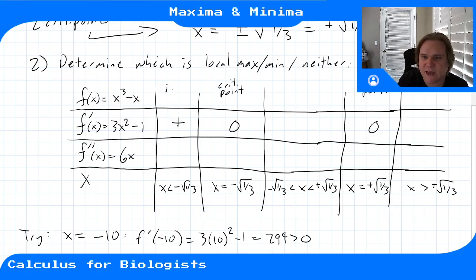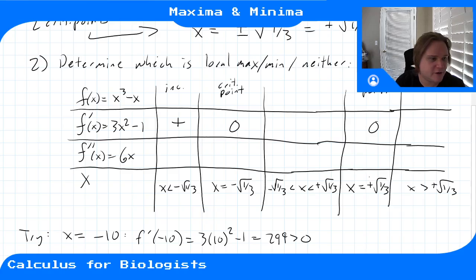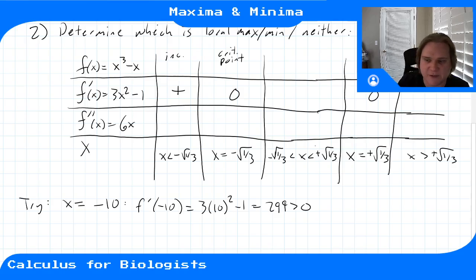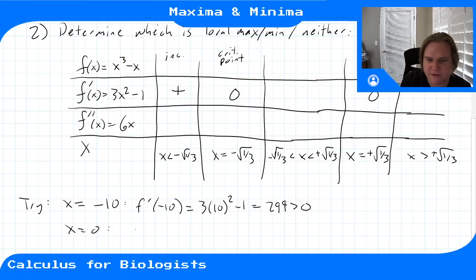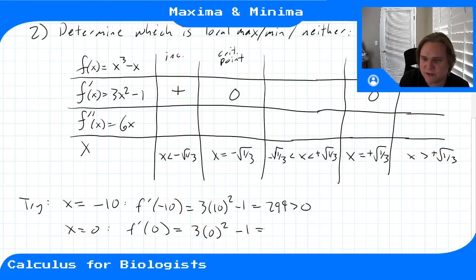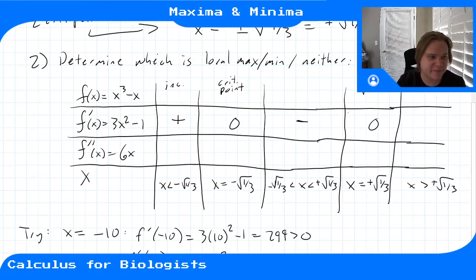Between the two critical points, x = 0 is definitely in that interval. f'(0) = 3(0²) - 1 = -1, which is negative. So the derivative is negative between the two critical points—the function is decreasing there.